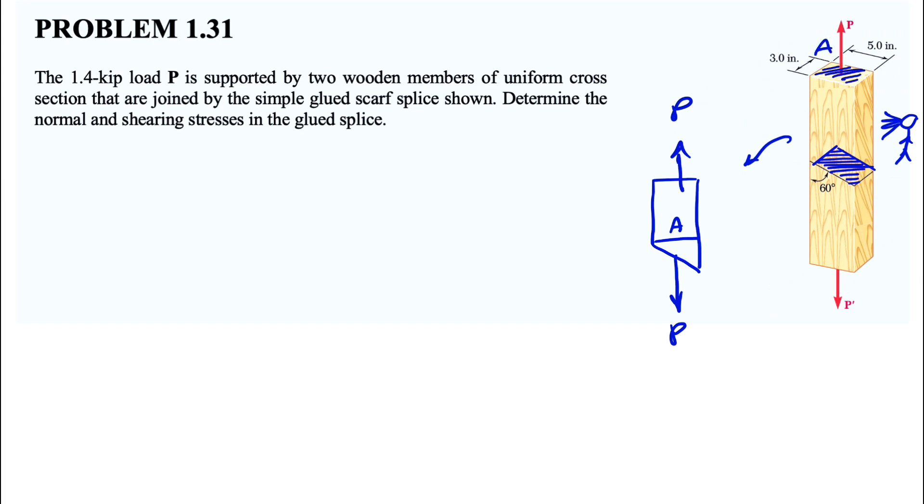And we also have the area of the glued section, which we're going to call A prime. And here we have A prime. We know this angle is 30 degrees because we know this one is 60. So we want to find this part that's going to be 30 degrees, which is what we have in here.